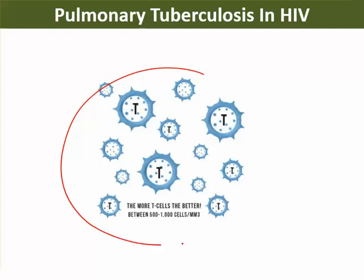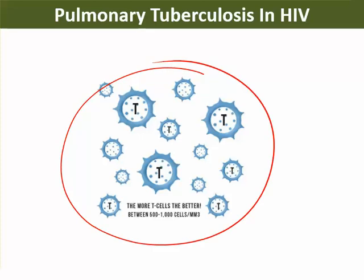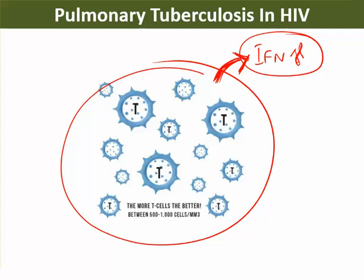CD4 T cells are very important. They produce interferon gamma, which performs three functions: it causes the phagolysosome to fuse, it recruits macrophages, and it makes macrophages synthesize nitric oxide. The nitric oxide then kills the mycobacterium. These are the three key functions of interferon gamma in controlling TB infection.